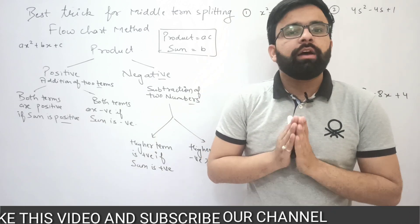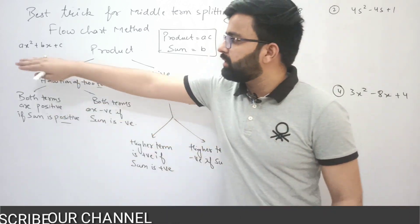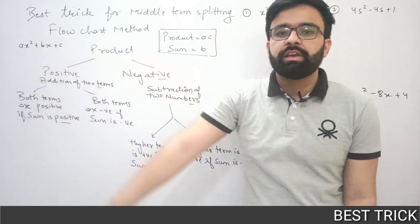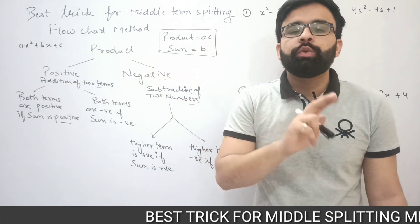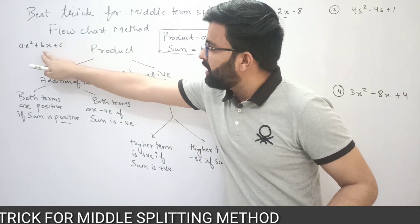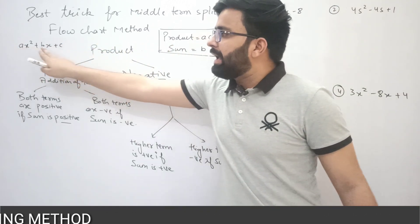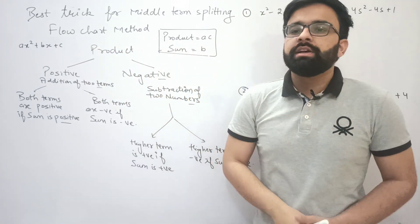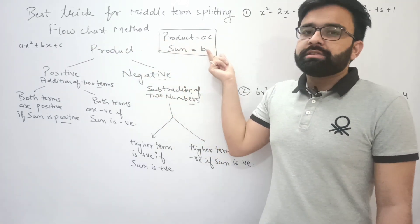As we know, we require a splitting of the middle term in a quadratic equation. The quadratic equation is ax² + bx + c. We need to split the middle term by finding two numbers whose sum equals b and whose product equals a×c.